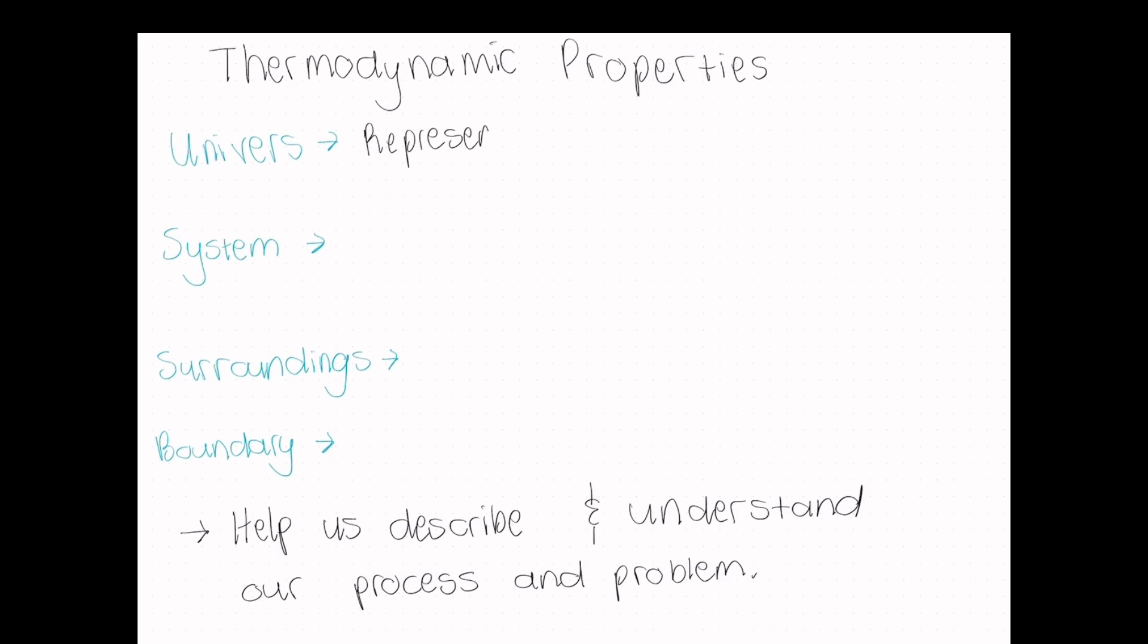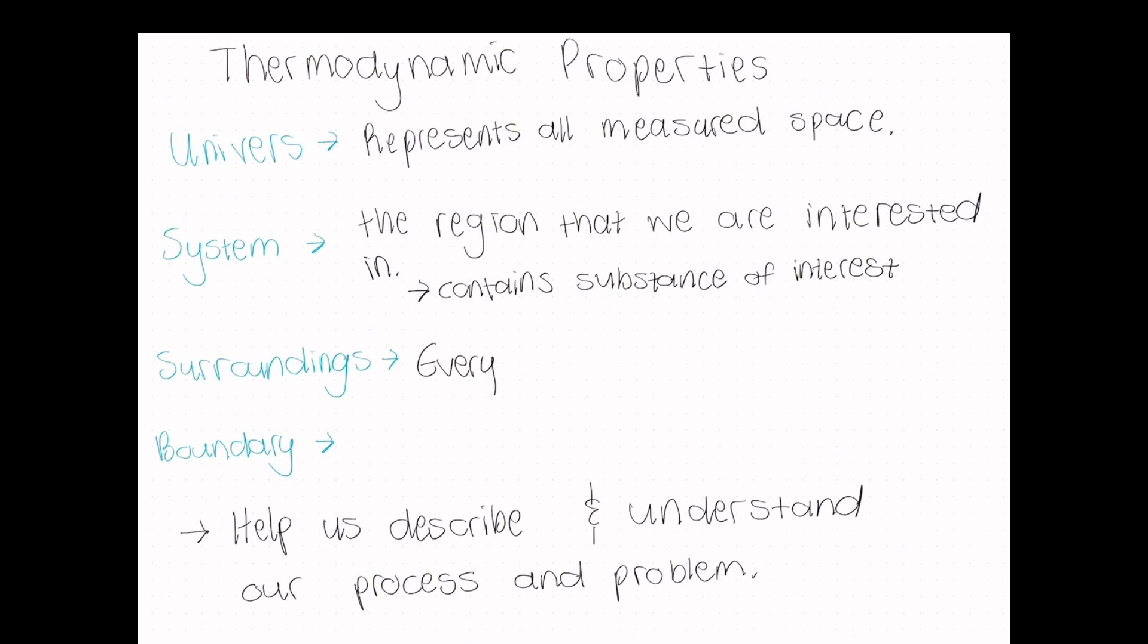The universe represents all measured space. The system is the region in which we are interested. You can identify it since it contains the substance of interest. The surroundings are everything around the system. The surroundings can be affected by the system and vice versa. The boundary is a separation between the system and the surroundings.